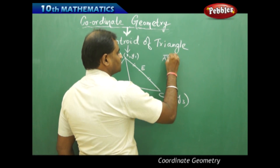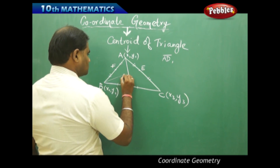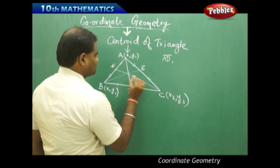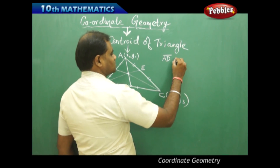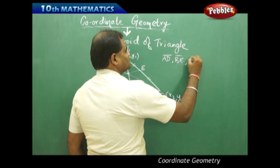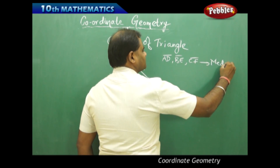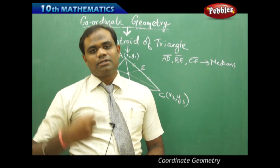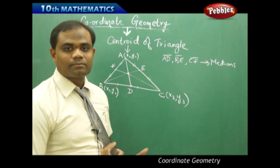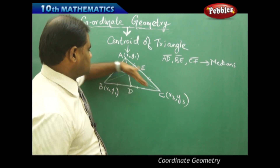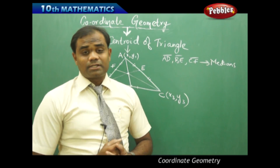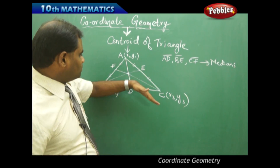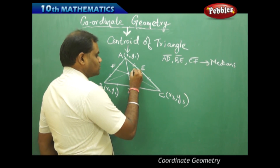So AD, BE, and CF are the three medians of the triangle. A median is a line which joins a vertex to the midpoint of the opposite side. AD, BE, and CF are all three medians, and they are said to meet at only one point.